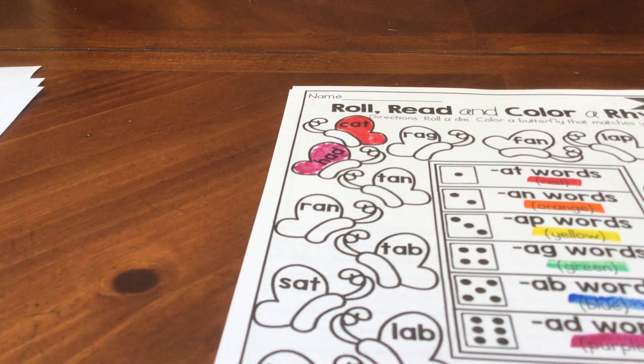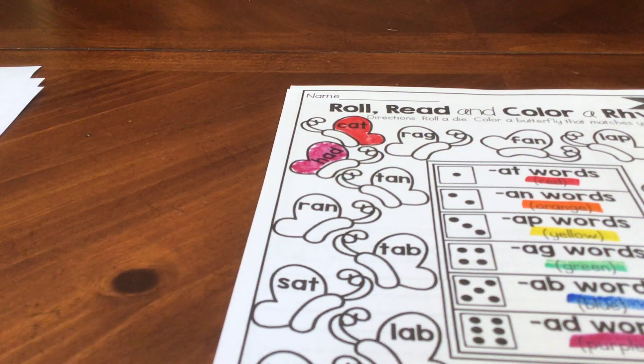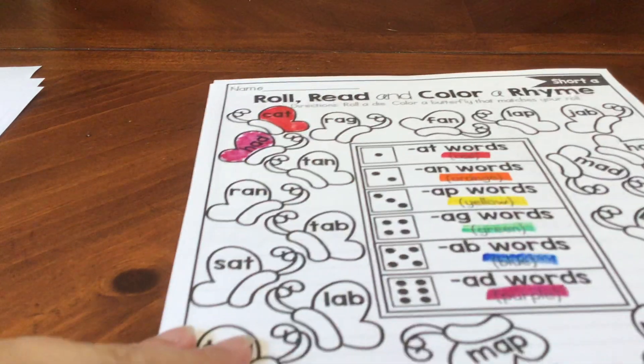So when you get finished, all the red words should rhyme with each other. All the purple words should rhyme with each other. All the yellow words should rhyme with each other. Okay, so you're coloring words that rhyme the same color.